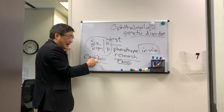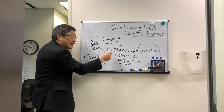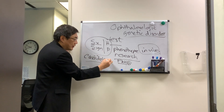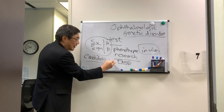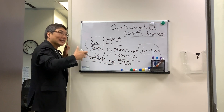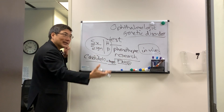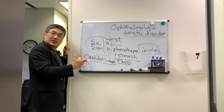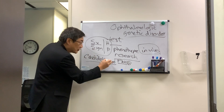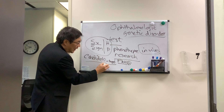That candidate gene pool, if it's a very characteristic phenotype, means you can just do the target gene. For example, that looks like Leber hereditary optic neuropathy, or that looks like Stargardt disease — then we just go straight for that gene.